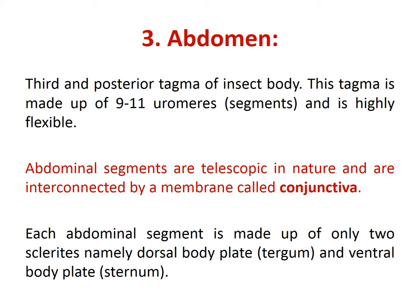Coming to the abdomen, the third and posterior tagma of the insect body. This tagma is made up of 9 to 11 uromere segments and is highly flexible. Abdominal segments are telescopic in nature and are interconnected by a membrane called conjunctiva. Each abdominal segment is made up of only two sclerites: namely the dorsal body plate tergum and ventral body plate sternum.